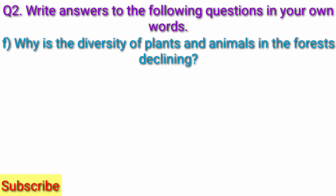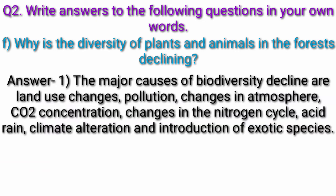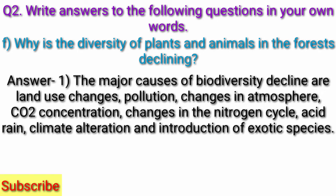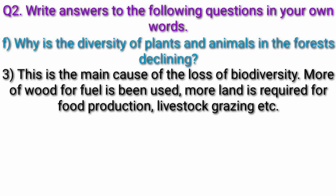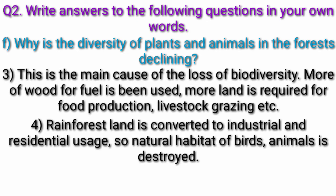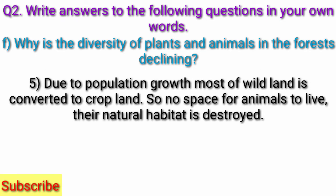Question f) Why is the diversity of plants and animals in the forest declining? Answer: The major causes of biodiversity decline are land use changes, pollution, changes in atmospheric CO2 concentration, changes in the nitrogen cycle, climate alteration, and introduction of exotic species. This is mainly due to population growth. More land is required for food production and livestock grazing. Rainforest land is converted to industrial and residential usage, destroying the natural habitat of birds and animals. Most wild land is converted to cropland, leaving no space for animals.